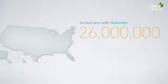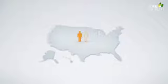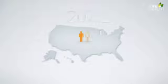Almost 26 million Americans are diabetic and at least 79 million are pre-diabetic. This means that one in three Americans has diabetes or pre-diabetes. By the year 2020, half of all Americans are predicted to have diabetes or pre-diabetes.